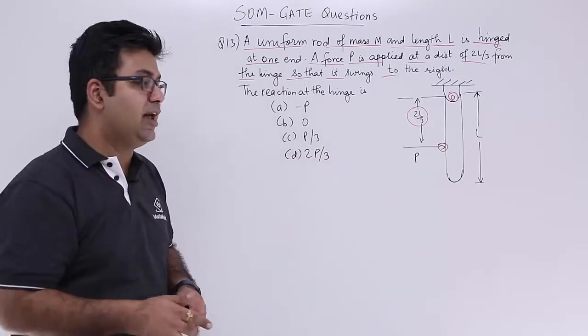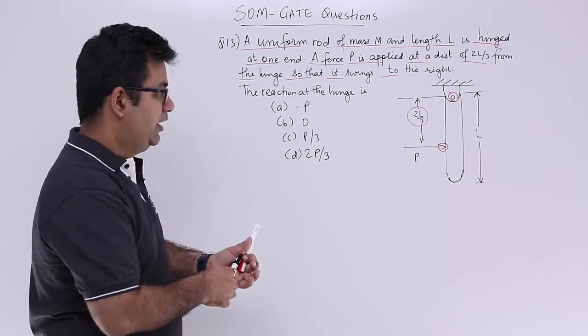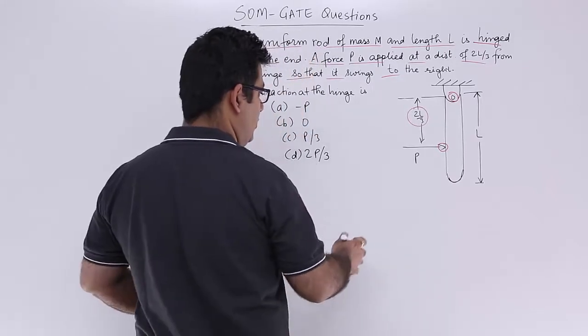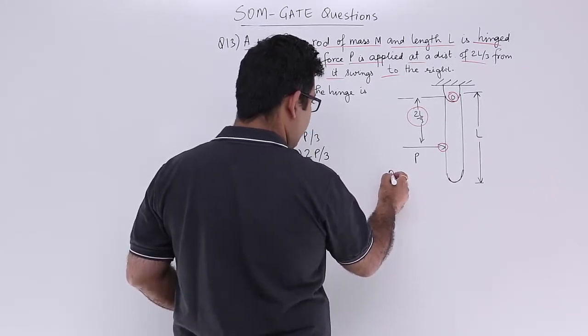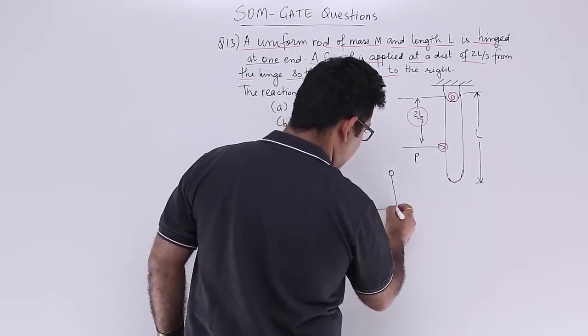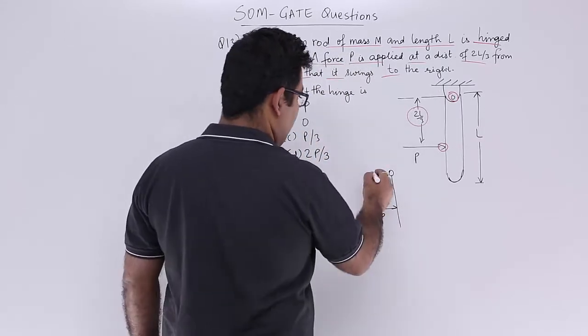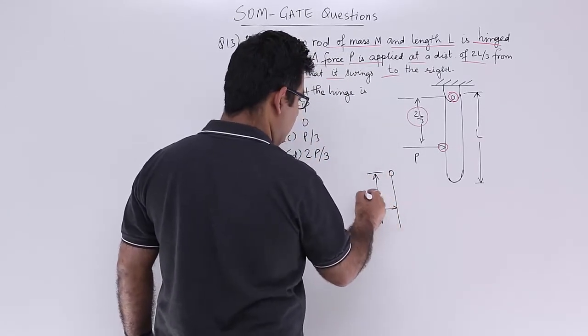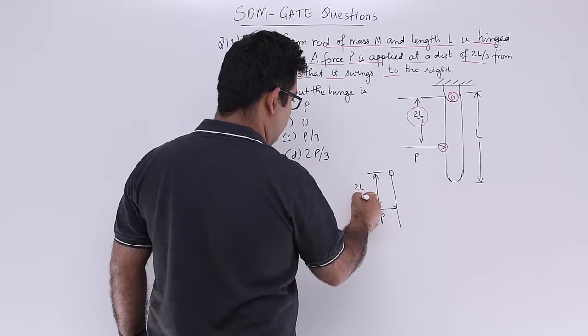If you draw the free body diagram for this particular question, you will have hinge over here. This is P and this is 2L upon 3.